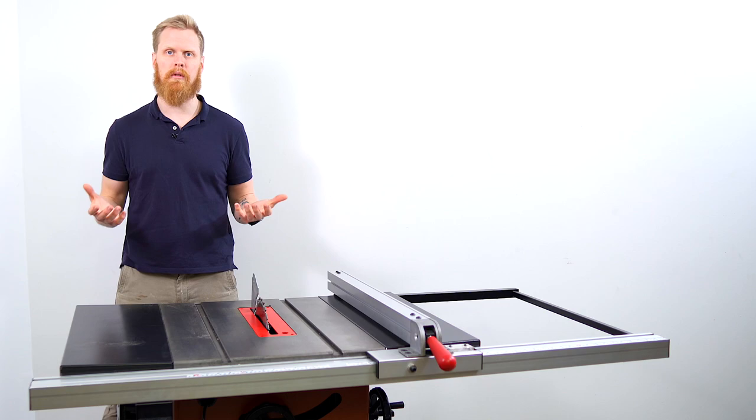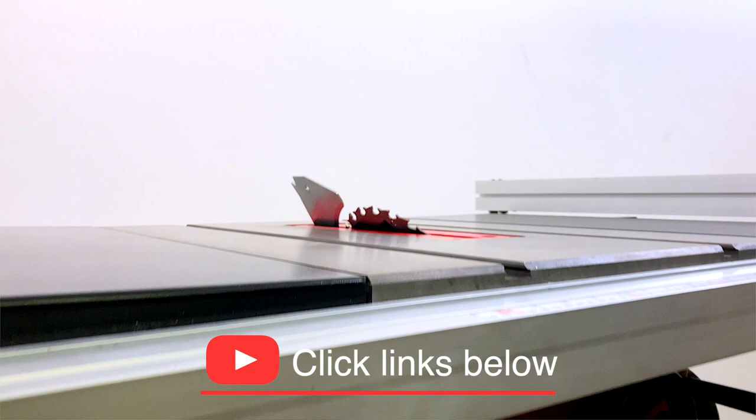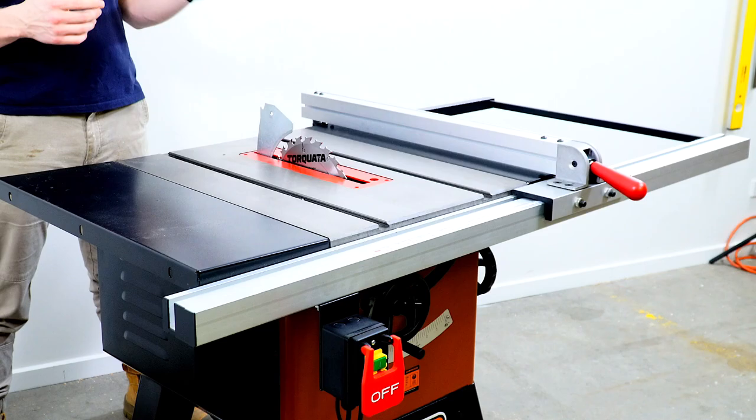Anybody who has used a saw will know it's got some pretty basic functions. It has a blade, a tabletop, a stop-and-go button and a rip fence. Anyone who has used a portable jobsite saw will know that that rip fence is pretty rubbish.